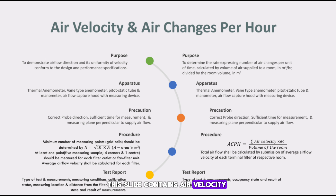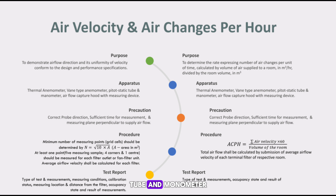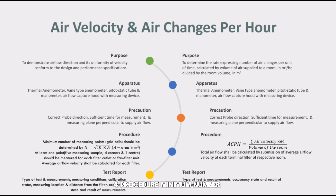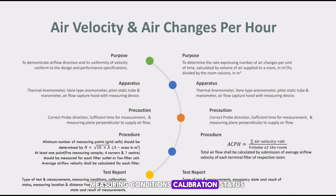Air Velocity Test — Purpose: to demonstrate airflow direction and uniformity of velocity conforming to design and performance specifications. Apparatus: thermal anemometer, vane-type anemometer, pitot-static tube and manometer, and airflow capture hood with measuring device. Precaution: correct probe direction, sufficient time for measurement, and measuring plane perpendicular to supply airflow. Procedure: minimum number of measuring points (grid cells) is determined by the formula N = √(10 × A), where A is area in square meters; at least 5 measuring samples — from corners and one from center — should be measured for each filter outlet or fan filter unit. Average airflow velocity shall be calculated for each filter. Test report includes: type of test or measurements, measuring conditions, calibration status, measuring location or distance from the filter, occupancy state, and result of measurements.